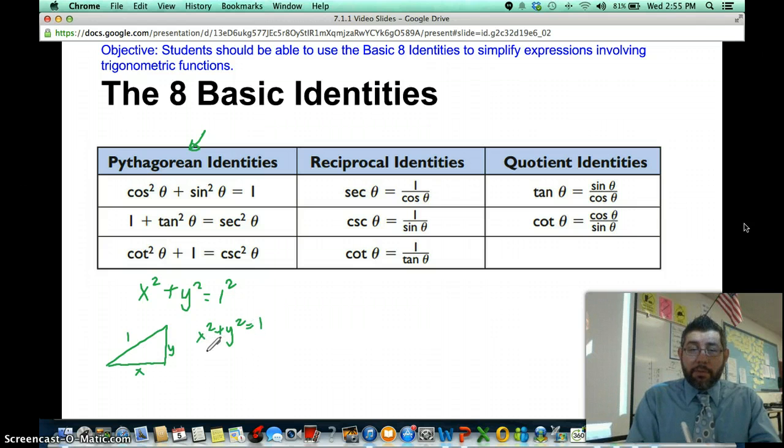Or you can think of the right triangle in the unit circle. This is the radius of 1, this is the x coordinate, and this is the y coordinate, and we can get x squared plus y squared equals 1. The x coordinate is the cosine, and the y coordinate is sine.